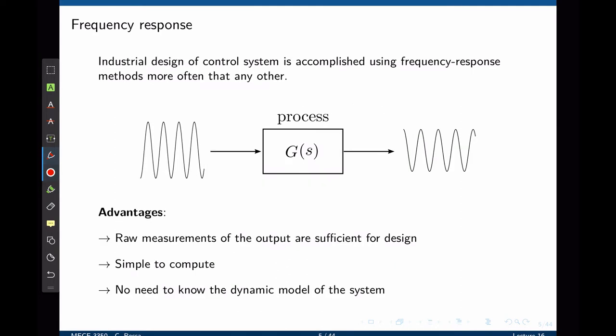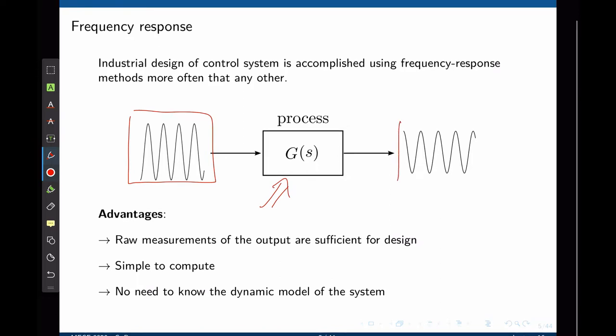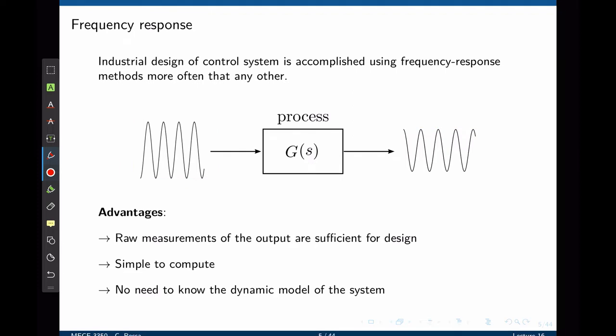Industrial design of control systems is accomplished using frequency response methods more often than any other method. We give a system an input as a sinusoidal waveform, we pass that function through a linear process G, and we watch the phase and magnitude of the output signal. And all this can be done experimentally. With this information, raw measurements of the output are sufficient to infer G and to design a control system to control that process G.